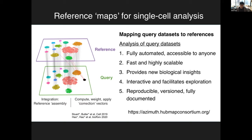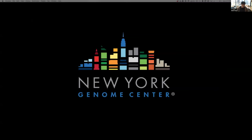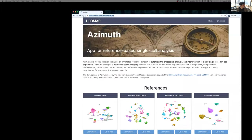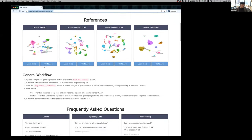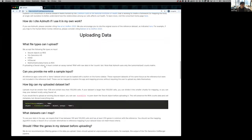Now I'm going to switch to a live demo. The link is azimuth.hubmapconsortium.org — all of this is free and open. I'm going to go through the demo slowly in hopes that some of you will click along with me. We'll use demo datasets that are preloaded into the app, but maybe you'll find it useful and think about applying it to your own data. I'm putting the link in the chat now.